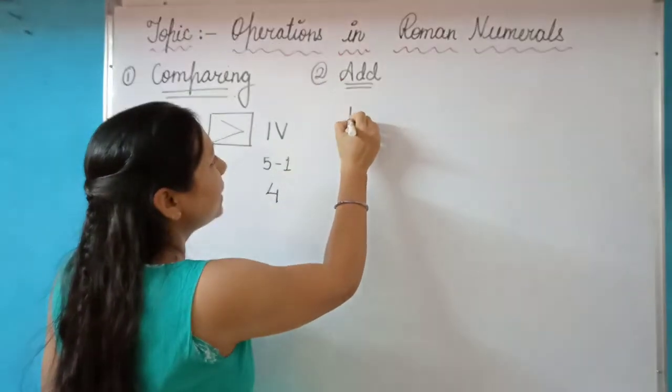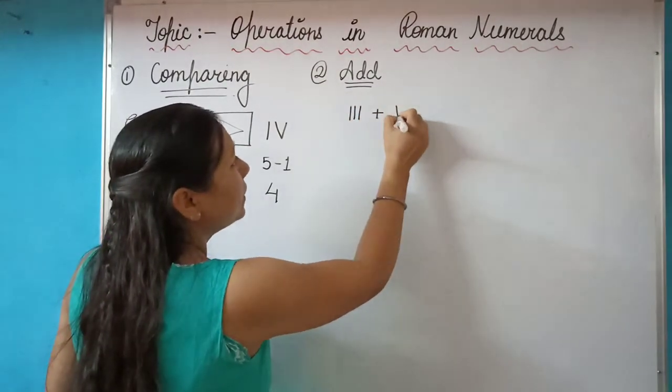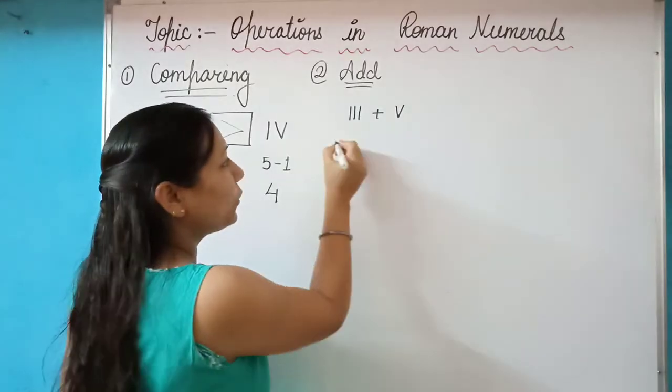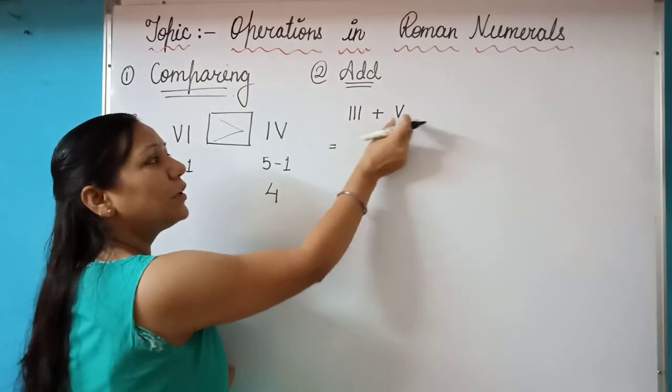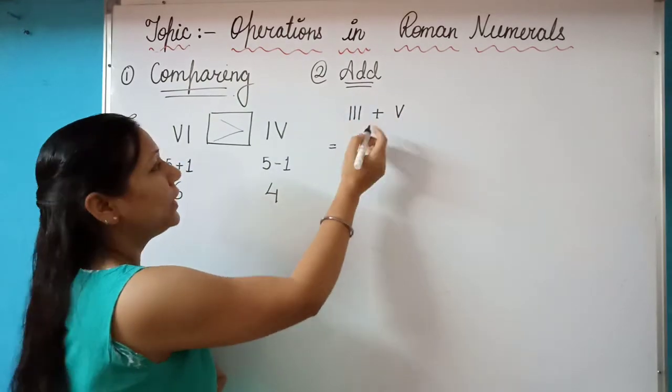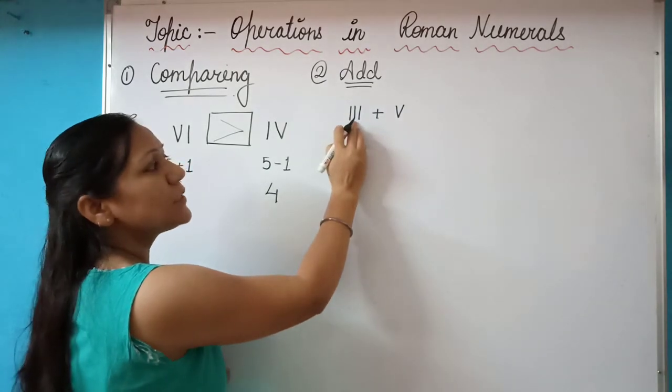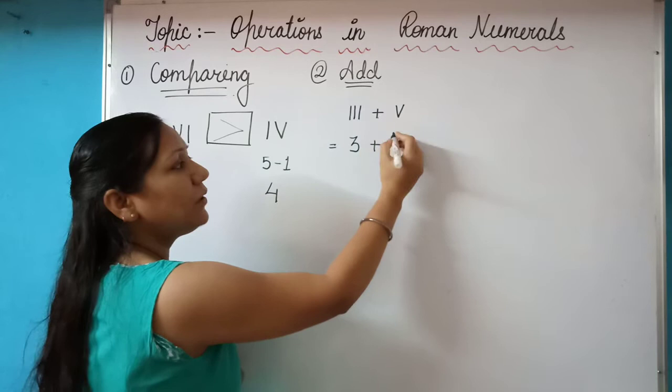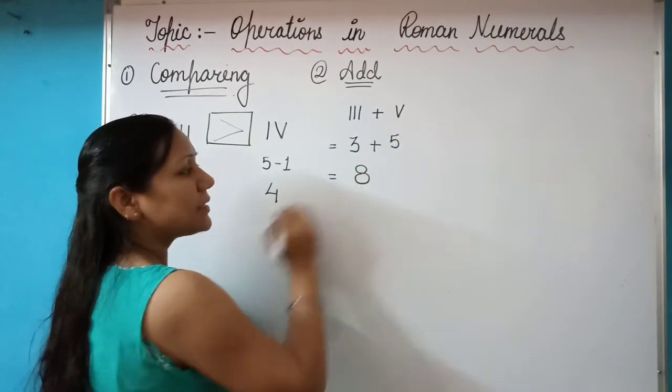For example, if it is III plus V. If it is said that you have to add these two values, how you are going to do that? Once again, the rule is same. You have to convert this into Hindu Arabic form. The Hindu Arabic form for III which is 1 plus 1 plus 1, so it is 3 and the symbol V represents 5. When you will add this 3 plus 5, it is 8.